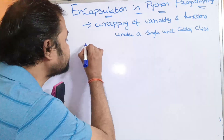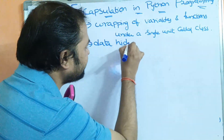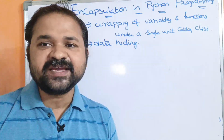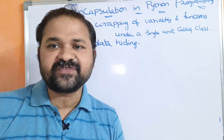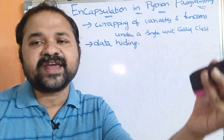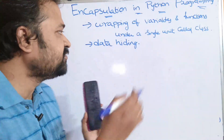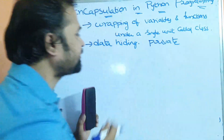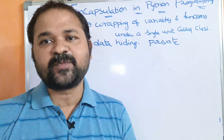The major advantage of encapsulation is data hiding. We can achieve data hiding with the help of encapsulation. Data hiding means we can use the variables and functions of a class only inside that class. We can't use variables and functions from outside the class. For that, we use the private access specifier in order to implement data hiding. Now, let us see an example program.